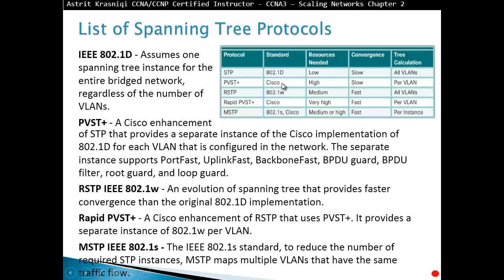Per-VLAN Spanning Tree is Cisco's — resources needed are very high because every VLAN has its own Spanning Tree process, and it is also very slow to converge. Rapid Spanning Tree, 802.1W, requires medium resources, is fast on convergence — that's why it's called Rapid — but applies to all VLANs, presenting the same single-instance problem as 802.1D. Rapid Per-VLAN Spanning Tree is Cisco's, requires very high resources, and is very fast, but the tree calculation is per VLAN.